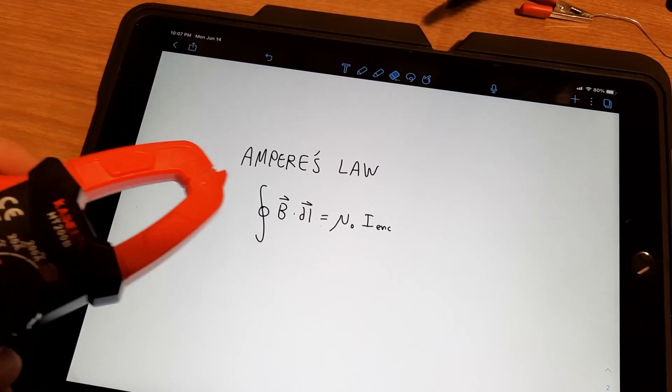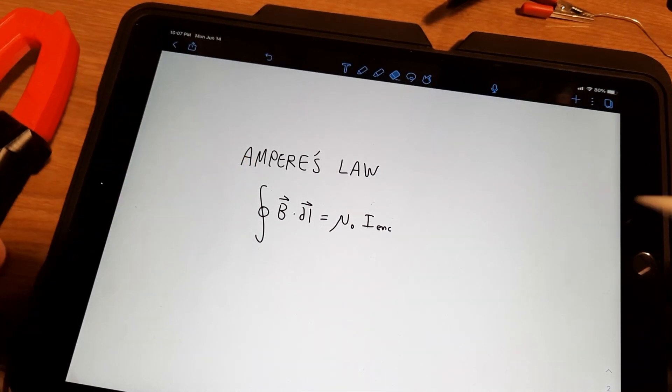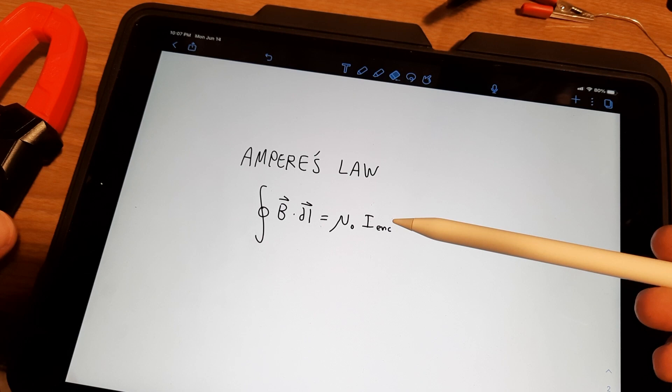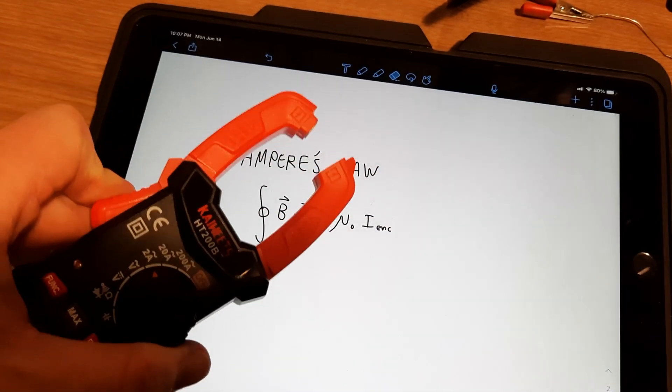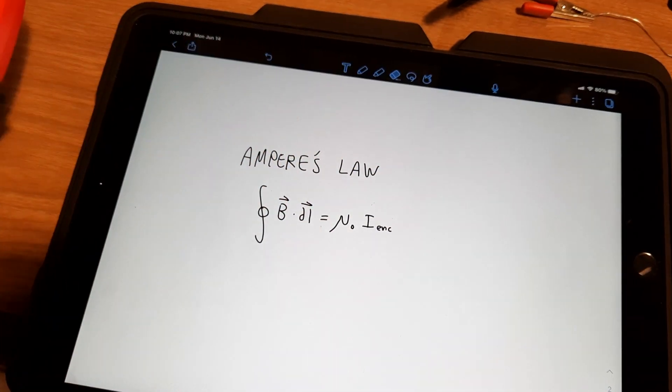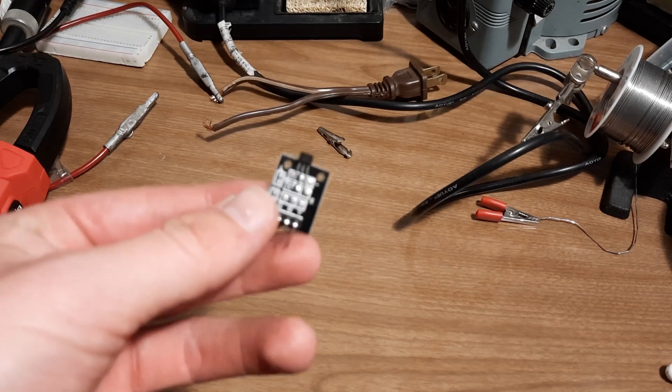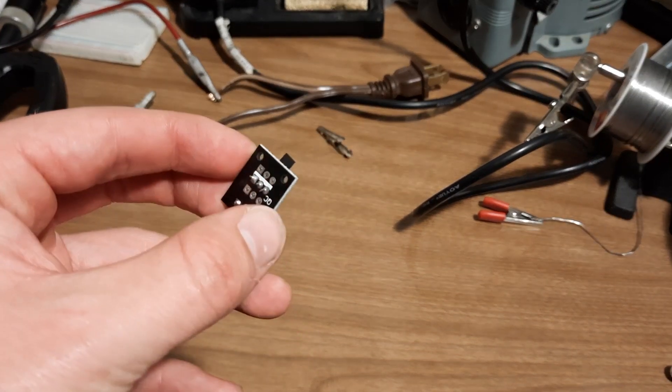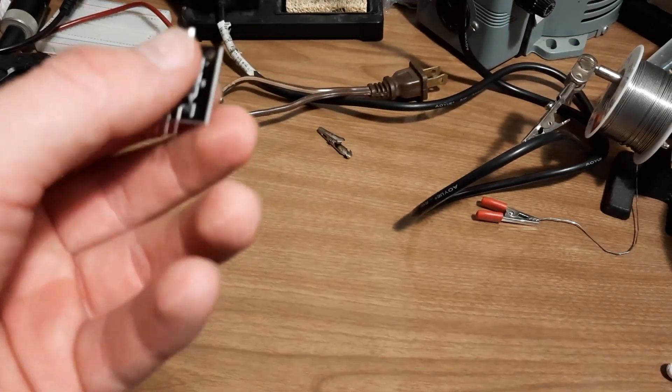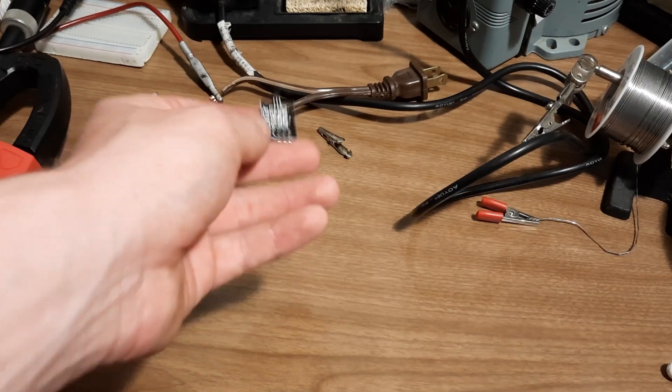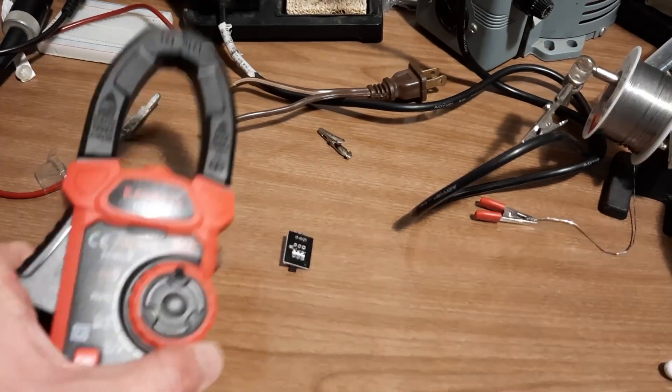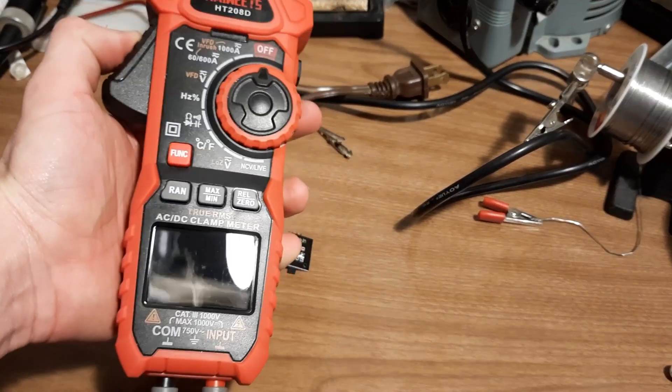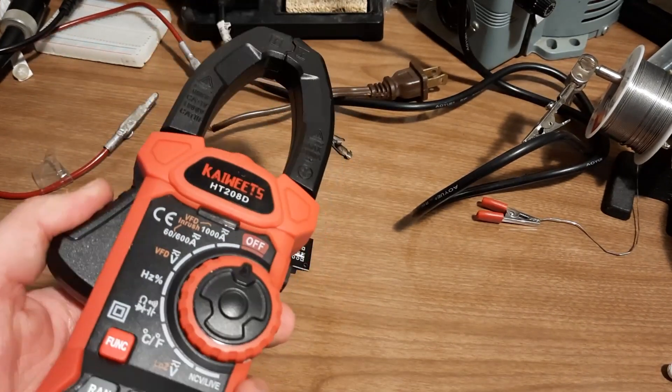Luckily though, Ampere's law still holds, because we still have a current flowing through that wire, so there's still going to be a magnetic field. It just won't be changing. So how do we measure that? As it turns out, there's a really cool device called a Hall Effect sensor, which lets you measure a magnetic field. And that is precisely the part that allows an awesome DC clamp meter like this to work properly.